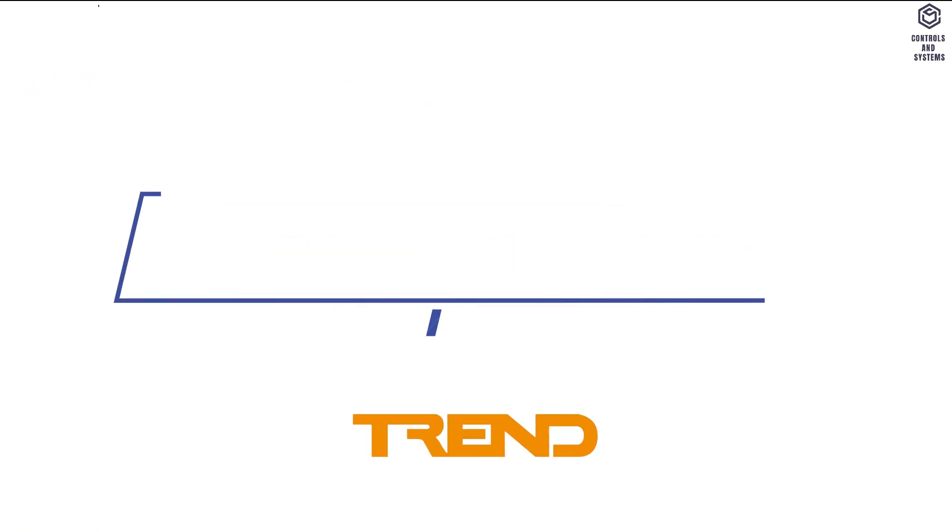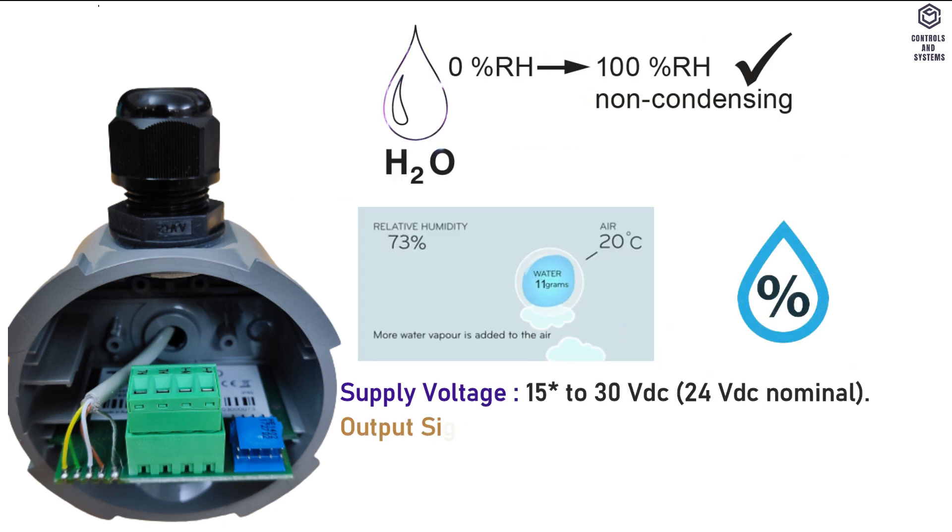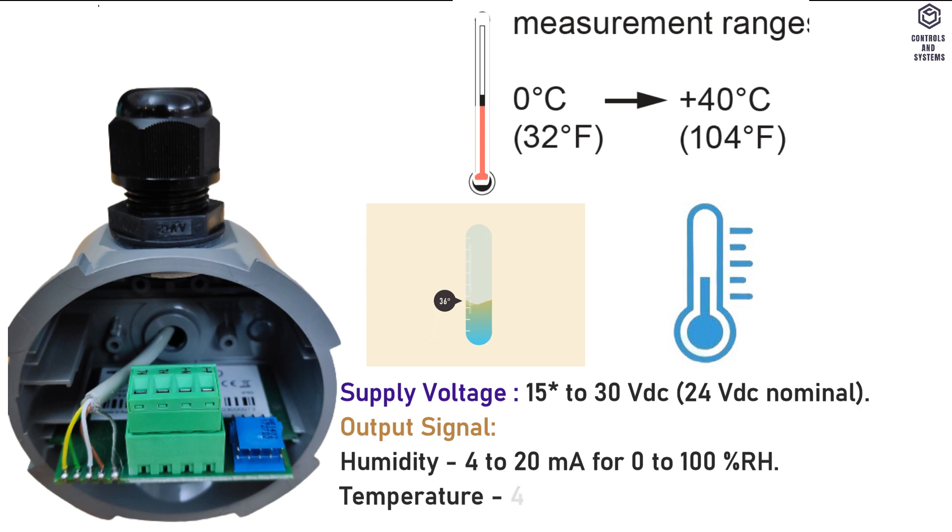Electrical Data: Supply Voltage is 15 to 30 Volt DC. Output signal for humidity is 4 to 20 milliamps for 0 to 100% RH. Output signal for temperature is 4 to 20 milliamps for 0 to +40°C.